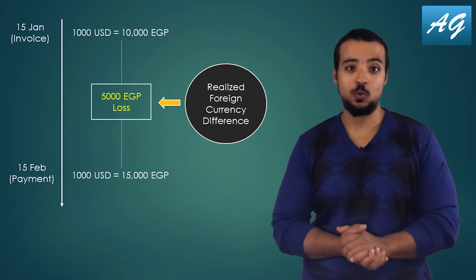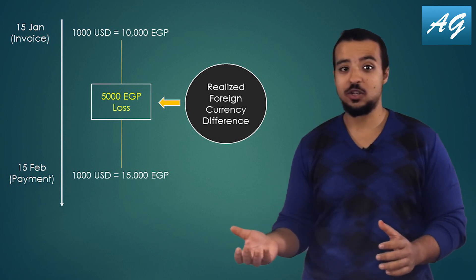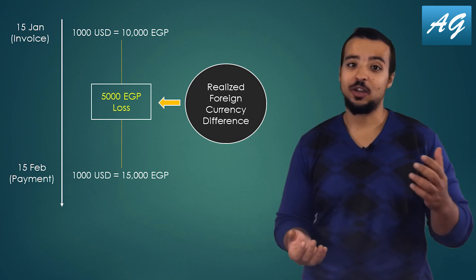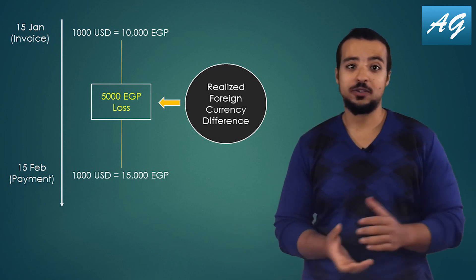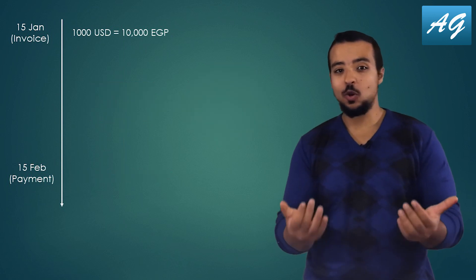It is called realized because it is an actual loss — we have actually paid our supplier 5,000 Egyptian pounds more.